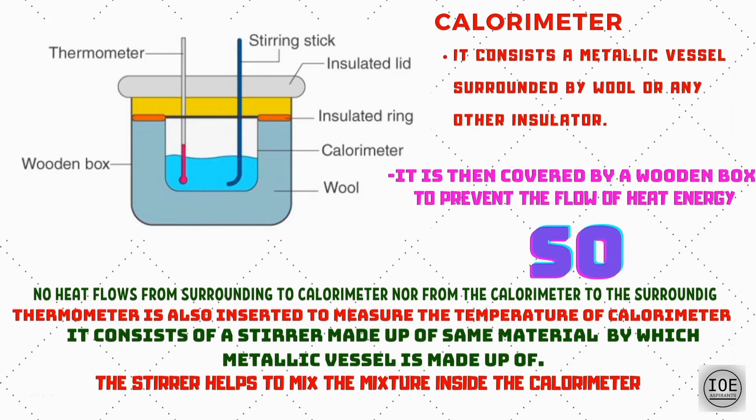The simple diagram for the calorimeter is given here. It is based on the principle of calorimetry. It was invented by Anthony Lavoisier in 1780. It is used to measure the amount of heat involved in a chemical or physical process.